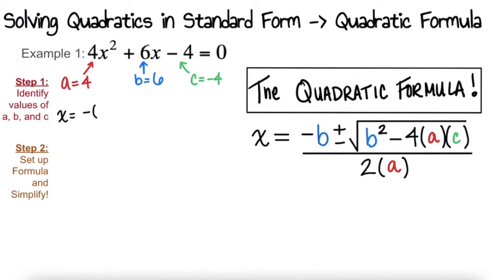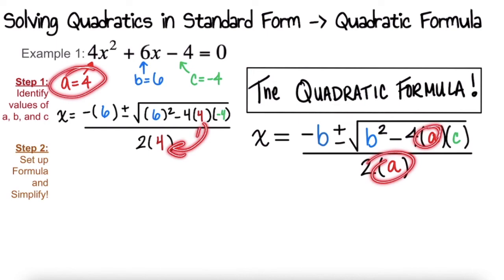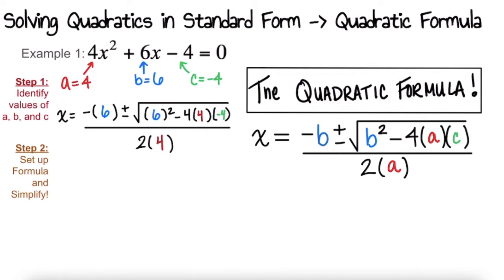x equals negative b, so I'm plugging in 6 for b, plus or minus the square root of b squared — so in this case b is 6 — minus 4 times the value of a, times the value of c, all divided by 2 times a. Anywhere we saw a, we plugged in our 4s. Anywhere we saw b, we plugged in our 6s, and everywhere we saw c, we plugged in our negative 4. Now all that's left is simplifying the expression.